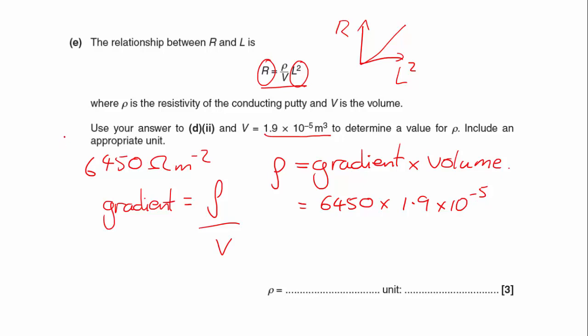And that gives me a resistivity of 0.123, and should go to two significant figures, because my volume is the two significant figures, so I would say 0.123, and now the unit.